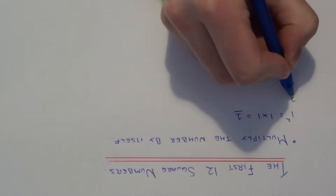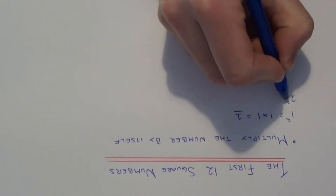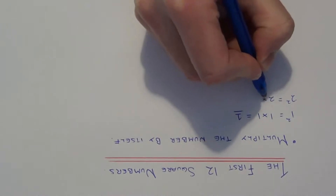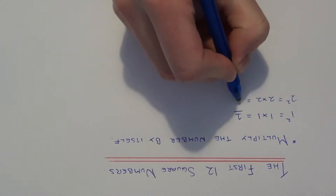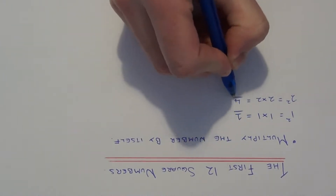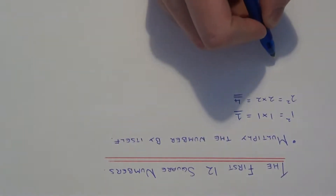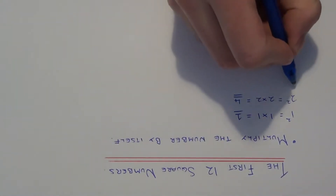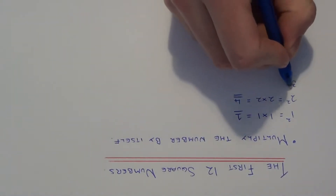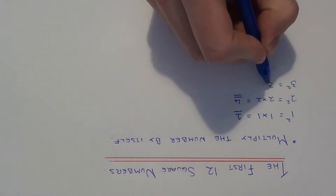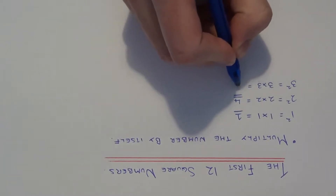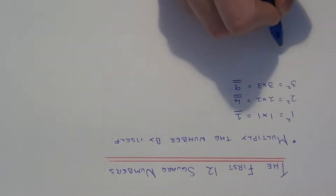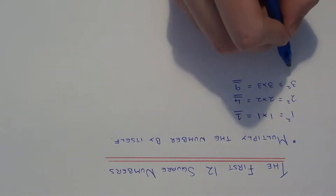The next one will be 2 squared — 2 times 2 will give you 4. So 4 is your second square number. The next one will be 3 squared, which is 3 times 3. That gives us 9, so 9 is the third square number.